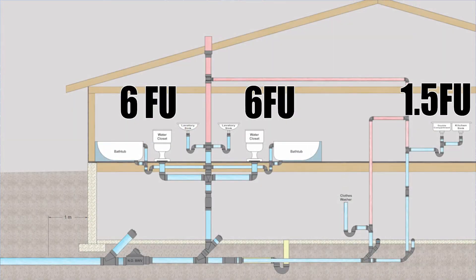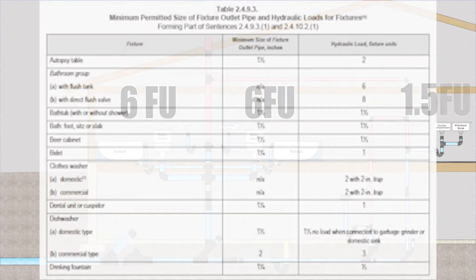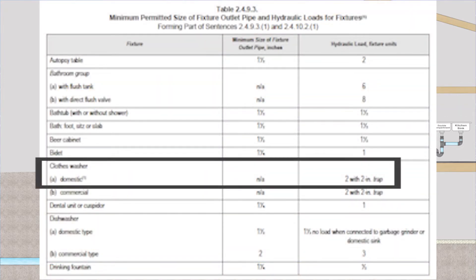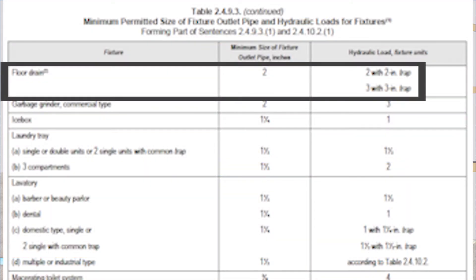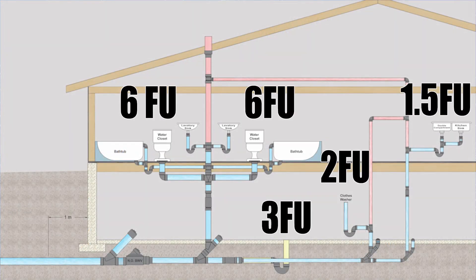Looking downstairs, we see the clothes washer. In table 2493 under clothes washer domestic, that will be two fixture units with a two inch trap. The last fixture draining into the building drain is the three inch floor drain down in the basement. Looking up floor drain in table 2493, it is three fixture units with a three inch trap. Now we've completed all the fixture unit loads, and I'm going to leave those on the picture so we have a visual reference of where they're coming from.